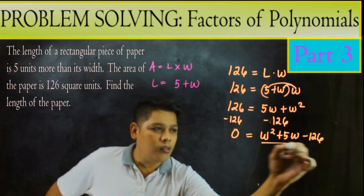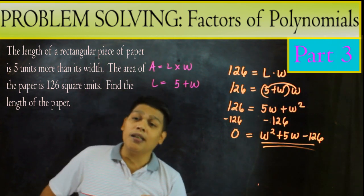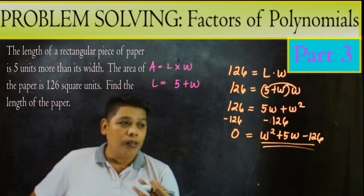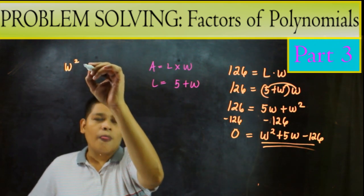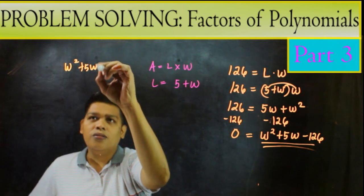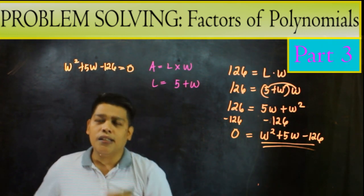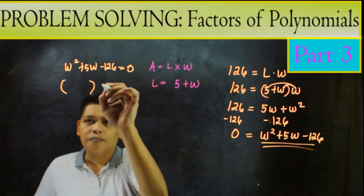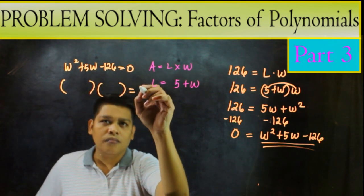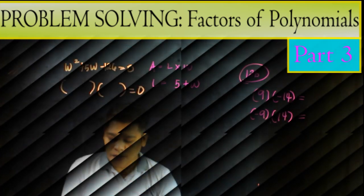Unahin natin yung may exponent. W squared plus 5W minus 126. So ito, si W squared plus 5W minus 126. Kailangan natin, i-factor. So ipapactor natin ito. W squared plus 5W minus 126 equals 0. So kapag pinactor natin yan. So ipapactor natin ito.